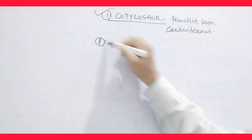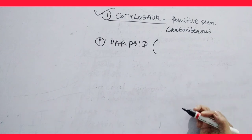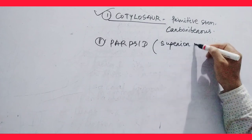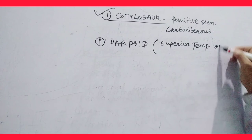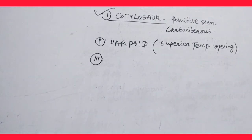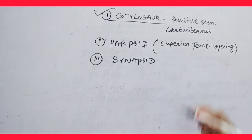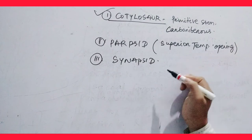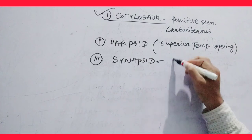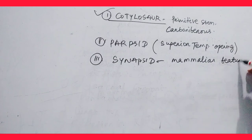Next is Parapsid. Parapsid has superior temporal vacuity — a superior temporal opening. Then there is Synapsid. It evolved from the mid-Carboniferous period — from the middle age. This group developed mammalian characters — remember it, mammalian features.